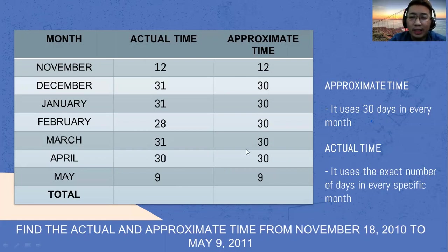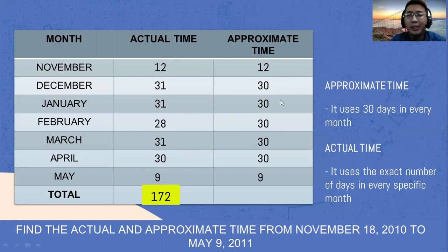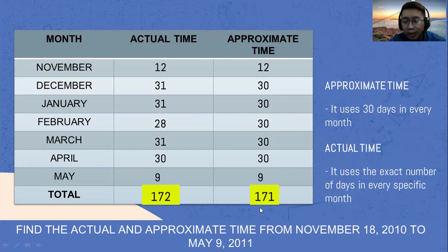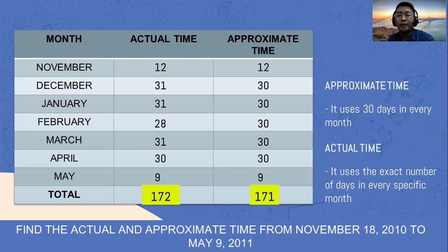We are going to add these values. For actual time: 12 plus 31 plus 31 plus 28 plus 31 plus 30 plus 9 — the total for actual time is 172 days. For approximate time: 12 plus 30 plus 30 plus 30 plus 30 plus 30 plus 9 — the answer is 171 days. We need to understand this because actual time and approximate time will be used in our next videos and problems.